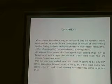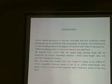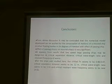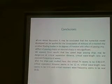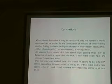It appears from the results that low speed, large passing ships may be dangerous at a critical separation distance of 12 meters. The critical wavelength ratio found here is 1.41.